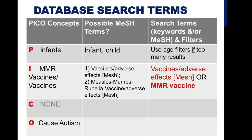For the second concept, I found that there are MeSH headings for both vaccines and for the MMR vaccine, and there are also good subheadings available. Ultimately, I've decided to search for vaccines and use the subheading Adverse Effects, or, to broaden the term, I also want to look at the MMR vaccine.